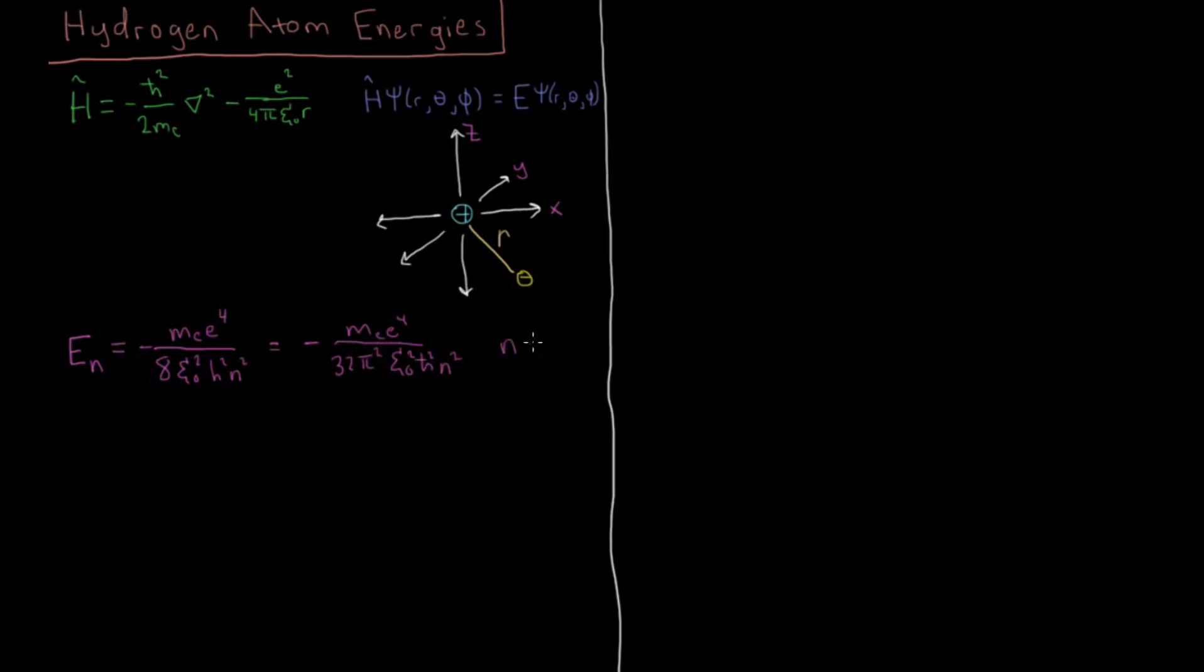And to remind ourselves, n equals 1, 2, 3, etc. n is an integer, and in this case the integers start at 1. In all of our model systems, we need to remember what integer the quantum number starts at, and for this case it is n equals 1, same as particle in a box, whereas rigid rotor and harmonic oscillator both start at 0.